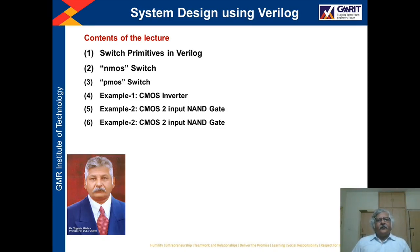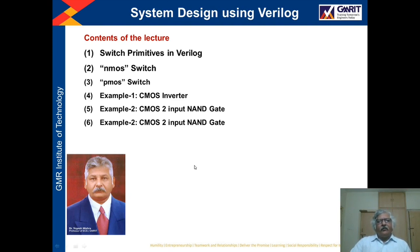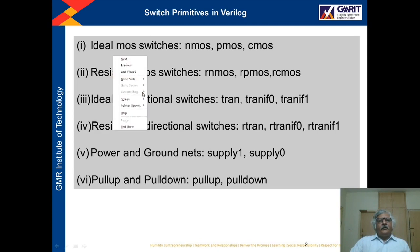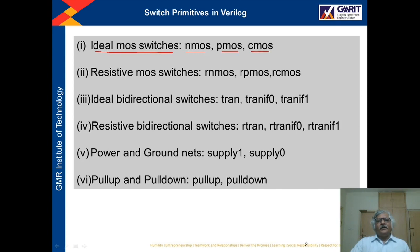In today's lecture, we shall discuss about the predefined switch primitives in Verilog, and in detail the pre-designed switch primitives NMOS and PMOS, with examples of how to model Verilog code using these predefined primitives. The ideal MOS switches which are predefined are NMOS, PMOS, and CMOS. The resistive MOS switches are R-NMOS, R-PMOS, and R-CMOS. The R here indicates resistive.